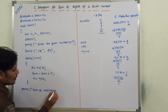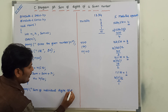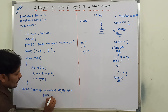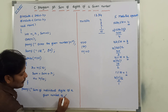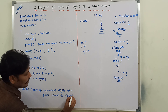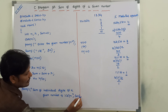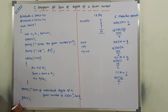printf: 'Sum of individual digits of a given number is percentage d, slash n', with sum as the variable. The final result is stored in the variable called sum. Next, getch. Brace close. This is the program.